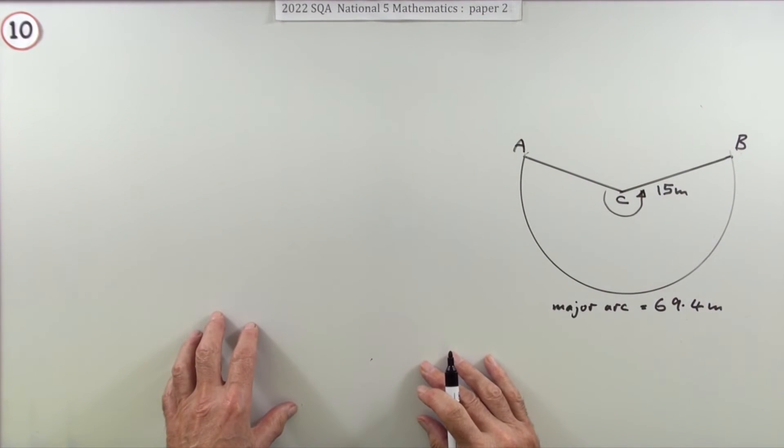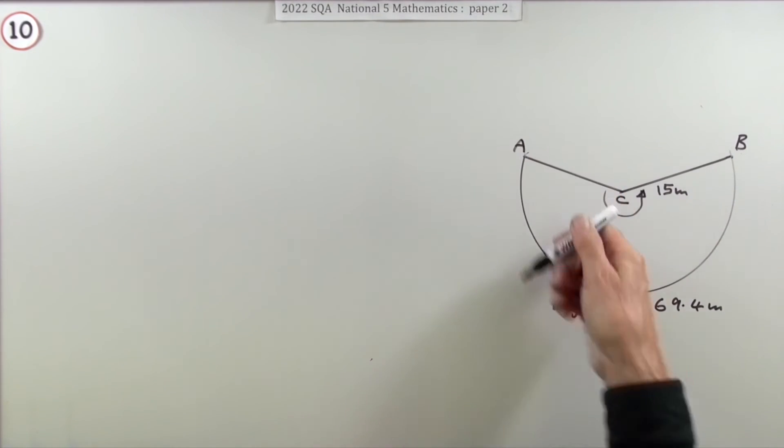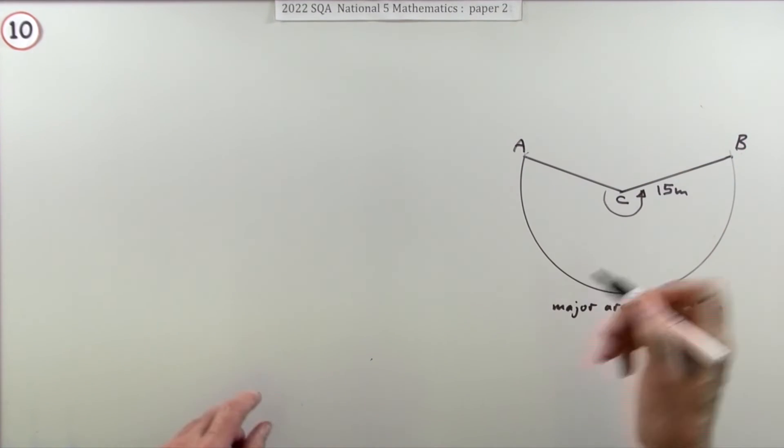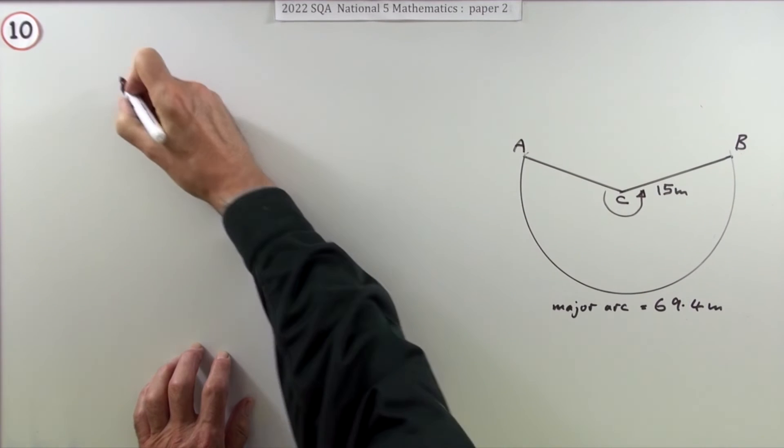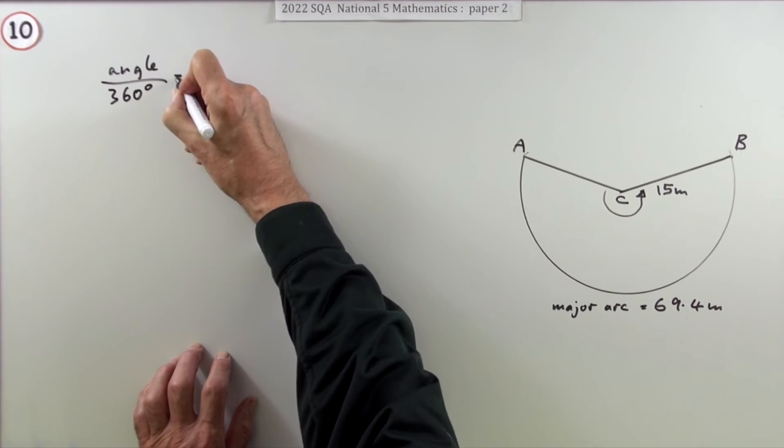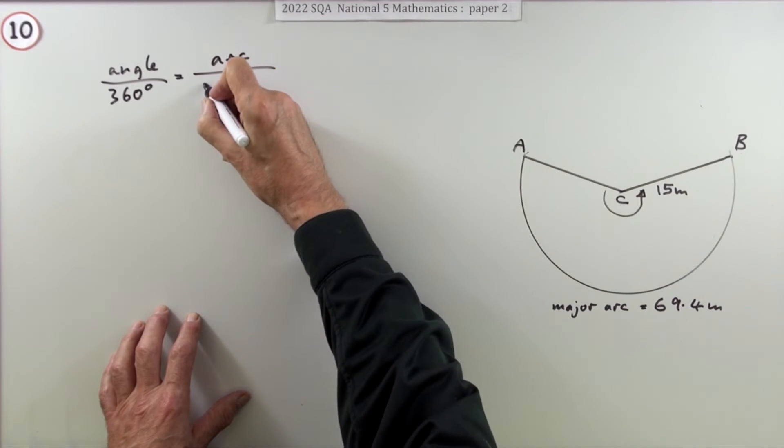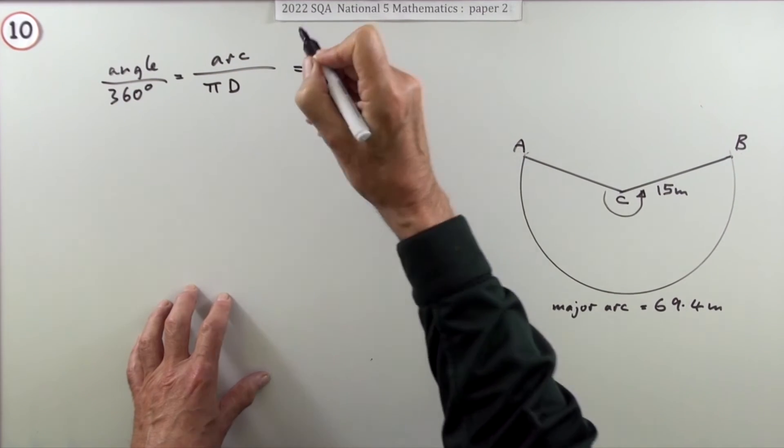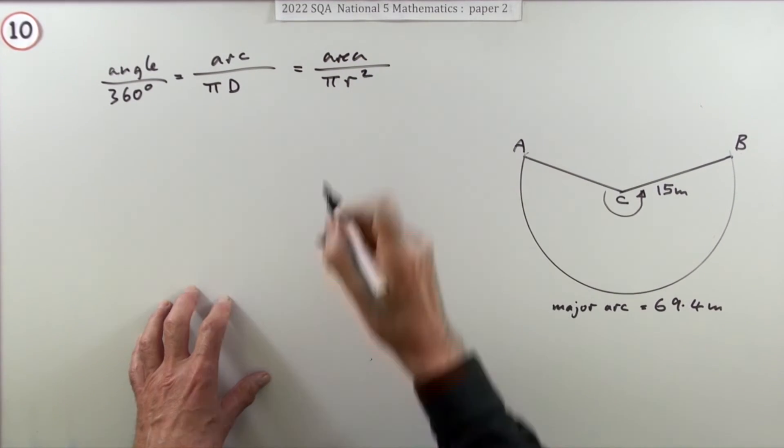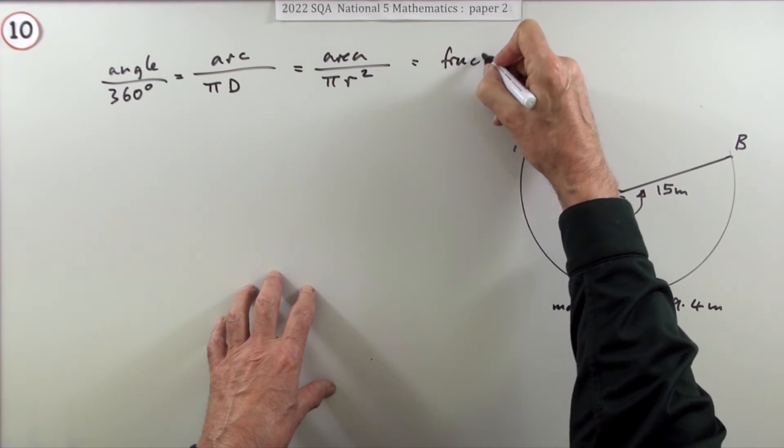It all goes by fractions. What fraction of a circle have you got? Whenever you've got this swept-out picture, it's all about what fraction is there. The fraction you've got is the same fraction that the angle is of 360 degrees, the same fraction that the arc is of the circumference (πd or 2πr), and the same fraction that the area of the sector is of the total area (πr²). Those three fractions are the same and they're all equal to the fraction of the circle.